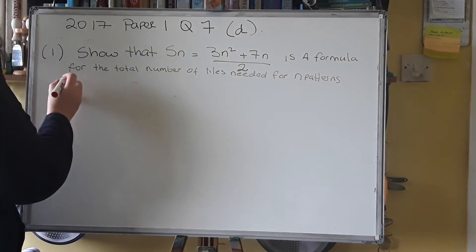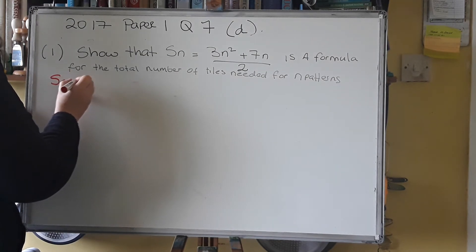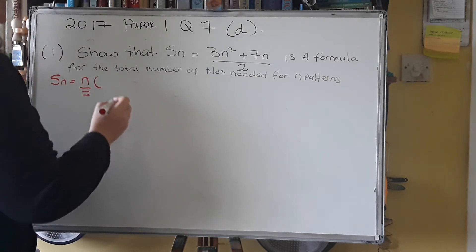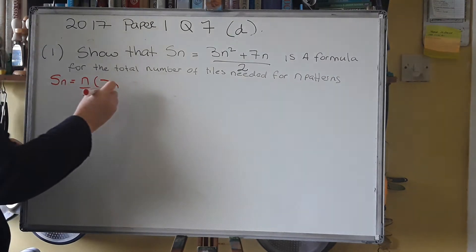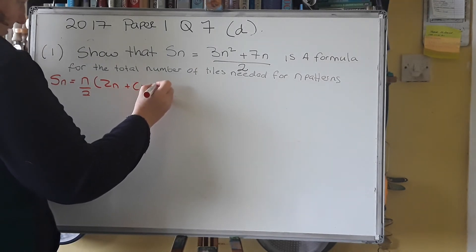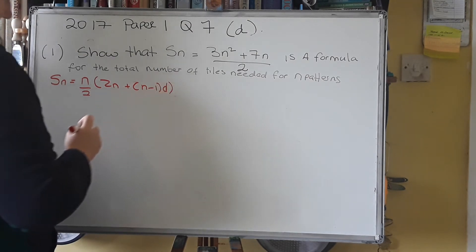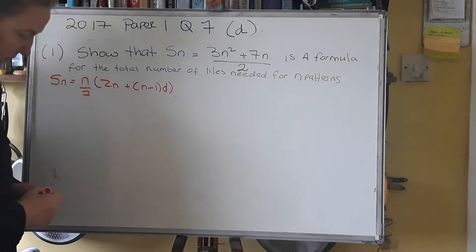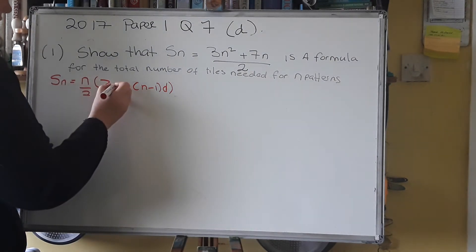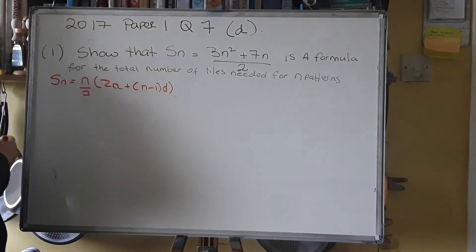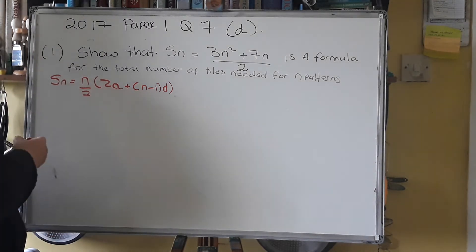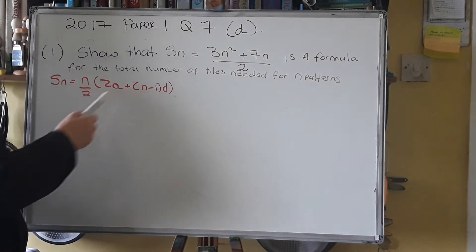So Sn equals n over 2 by 2a plus n minus 1 by d. And that's n multiplied by all of that and over 2. Just sometimes the way this is written can be a little bit confusing. Oh sorry, that should be 2a not 2n. Alright, now what you want to do first of all is you want to replace a and d with numbers because you want to get this just so that it's in terms of n.